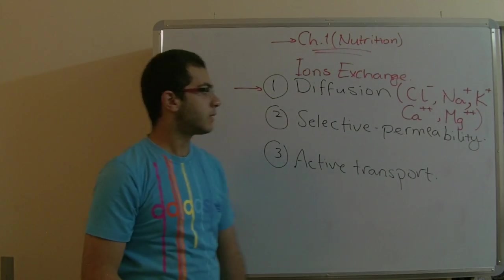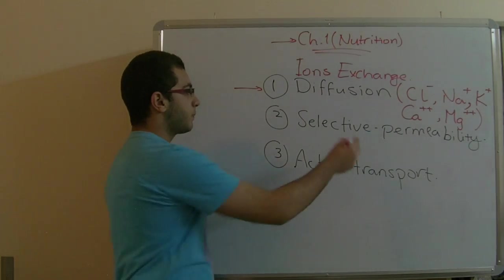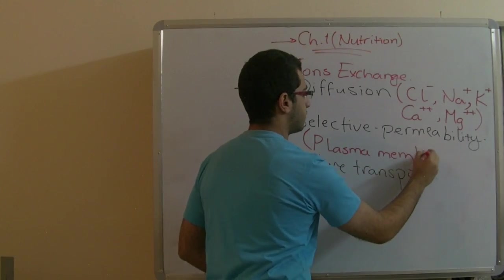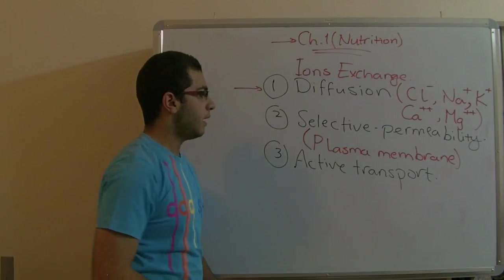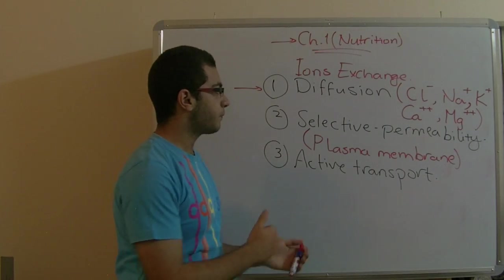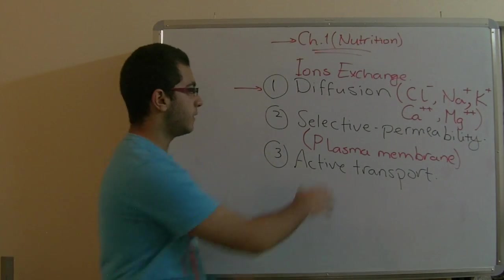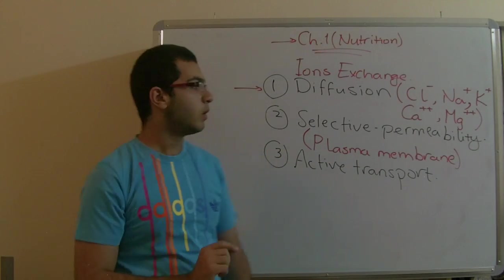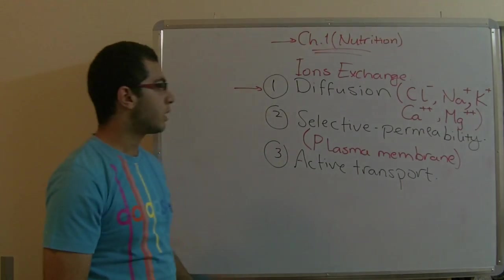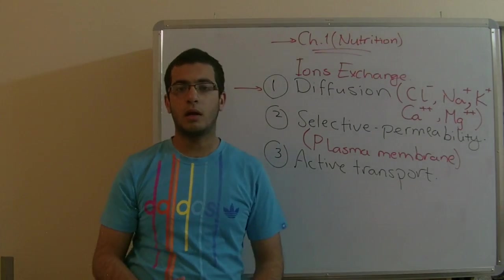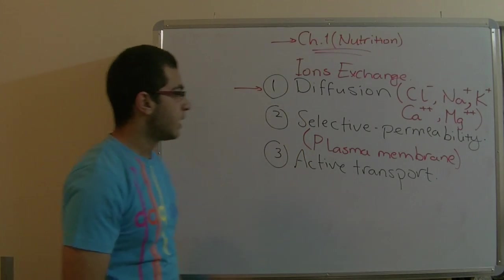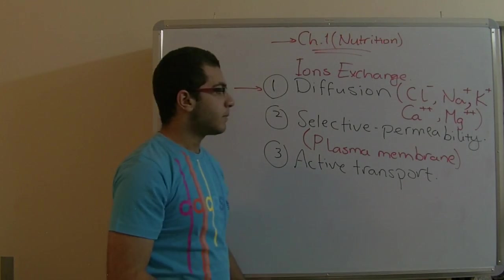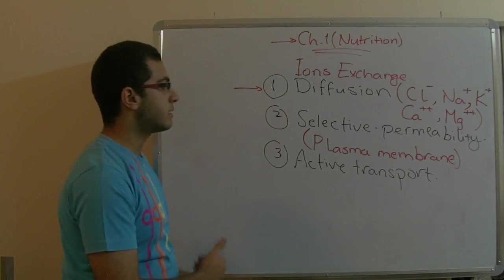In selective permeability, we have also talked about this in water absorption through a semipermeable membrane — the plasma membrane. In water absorption, molecules are selectively permeable according to their size: some small molecules pass easily, others pass with difficulty, and large molecules like fats don't pass at all. However, in salt absorption, selective permeability depends on the needs of the plant — the plant absorbs salts according to its needs, regardless of their size or shape.